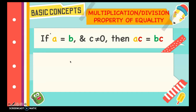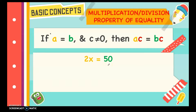Next, we have the Multiplication and Division Property of Equality. If a is equal to b and c is not equal to zero, then a times c is equal to b times c. Example: 2x is equal to 50. Since 2 is multiplied by x, to eliminate this 2 we divide both sides by 2. The opposite operation of multiplication is division. So 2 divided by 2 equals 1, leaving x, and 50 divided by 2 equals 25. Our answer is x equals 25.